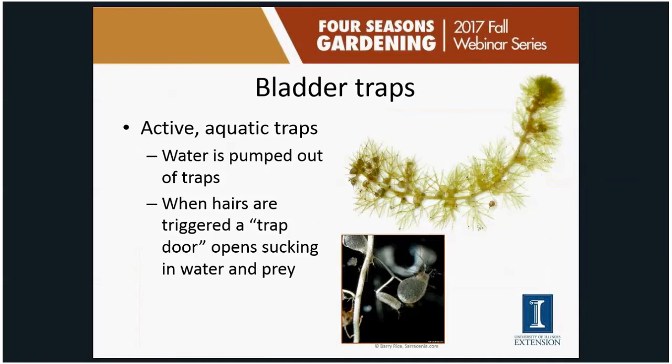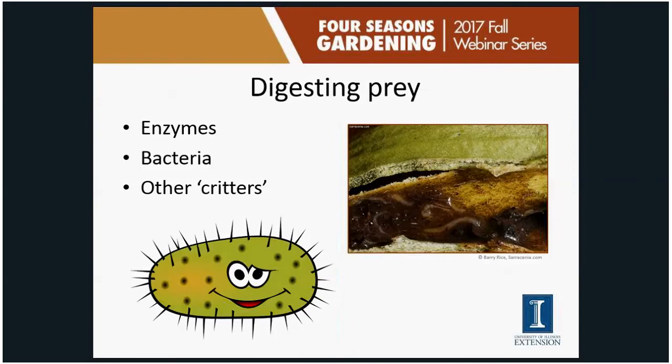The last trap type is the bladder trap — another active trap found in aquatic situations. The plant pumps water out of small bladder traps, leaving them filled with air. When a small aquatic invertebrate swims near the trigger hairs, a trap door opens, suction pulls water and the invertebrate inside, the door shuts, and the plant begins breaking down its food.